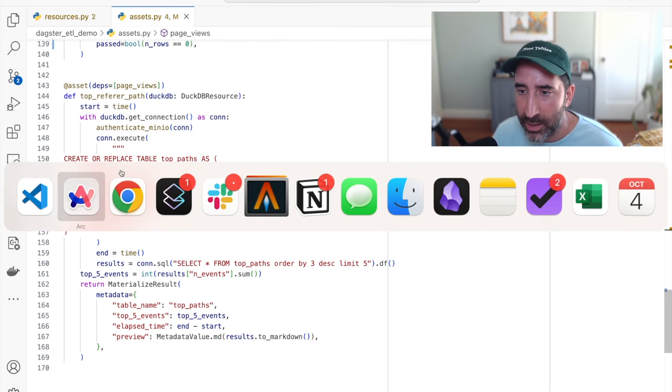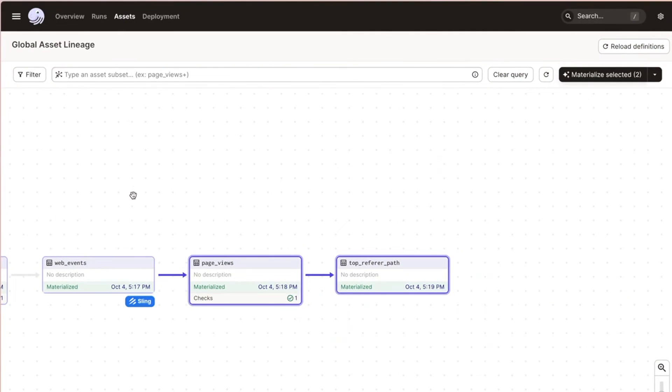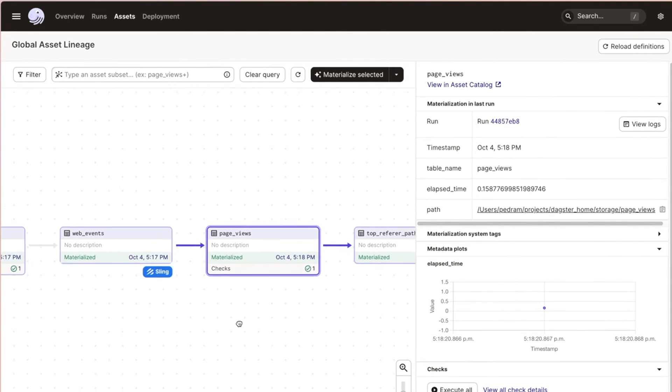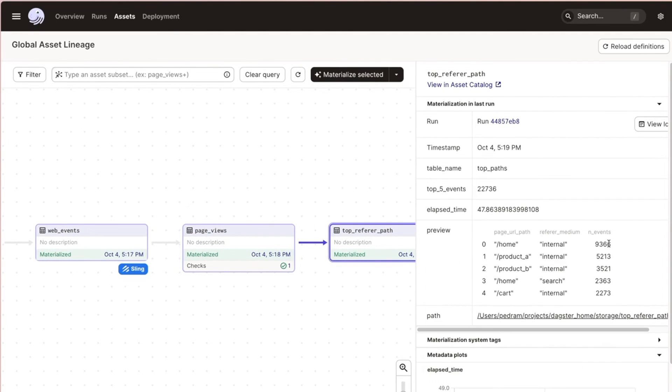Let's take a look at that materialized in Dagster. You can see here there's actually a preview of the data. We can see how many events by path and by medium. We can see how this has changed over time. You're really getting a sense of how easy and quick it is to use Dagster embedded ELT with the Sling library to just get some data in and out of these systems.